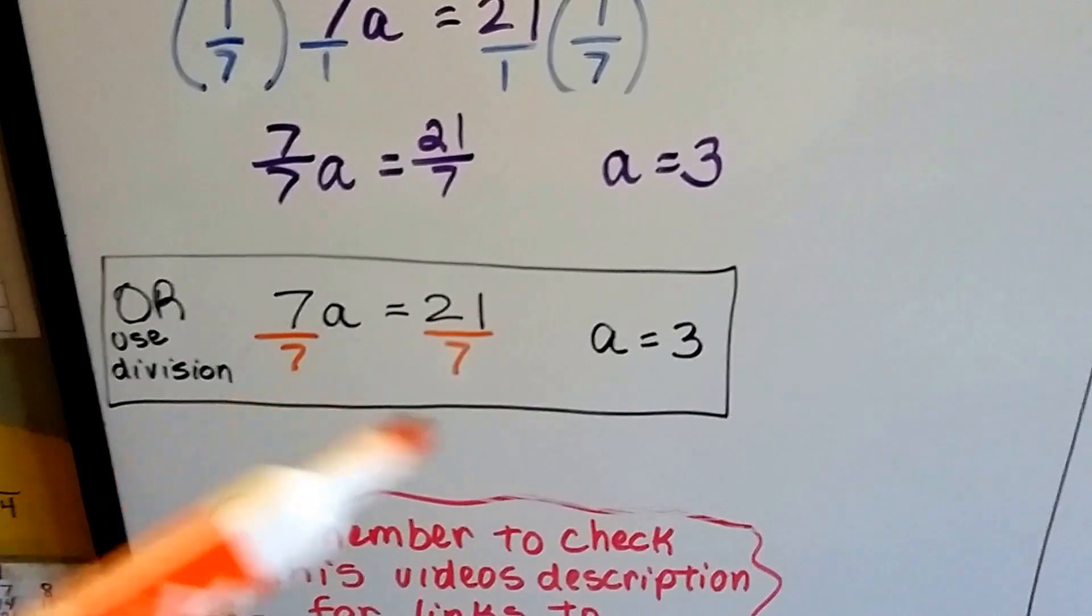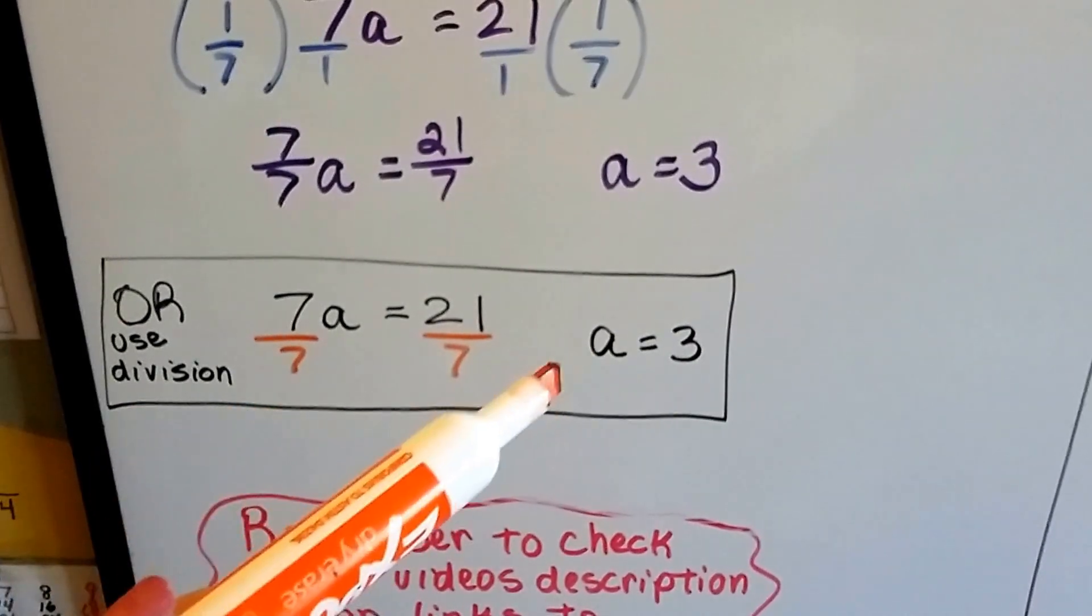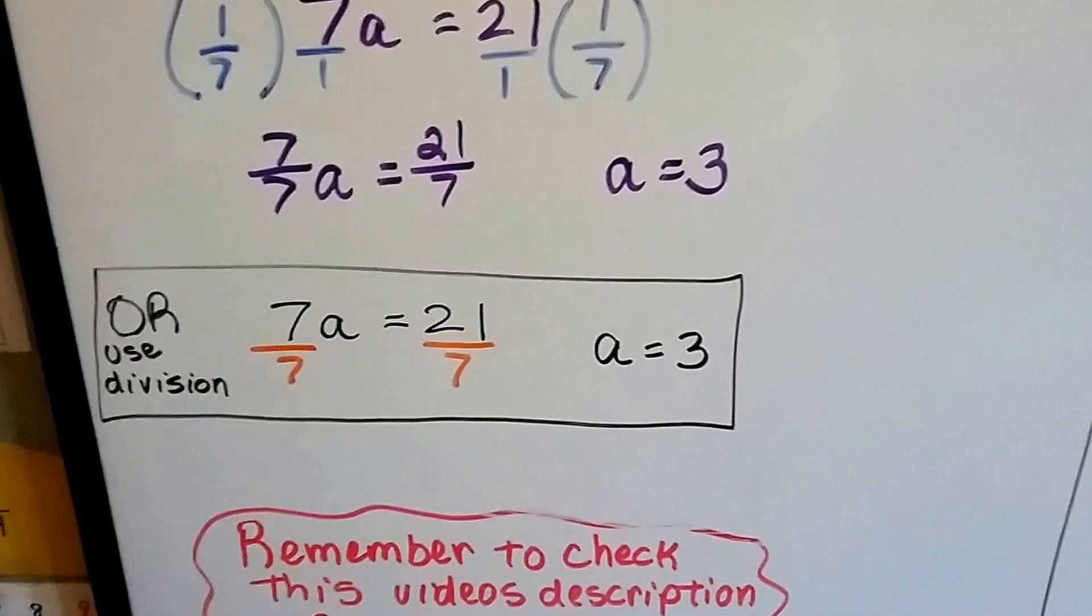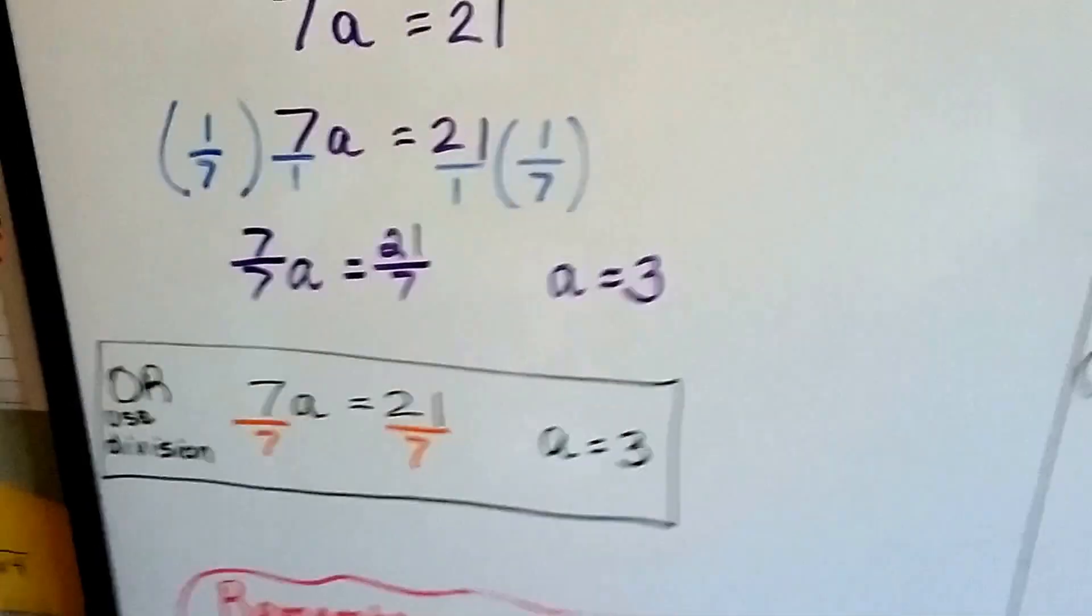7 divided by 7 is 1, so we get an a, because our friend the invisible 1 is there, and 21 divided by 7 is 3. And it goes a lot quicker when we know what we're doing, so we just skip some steps.